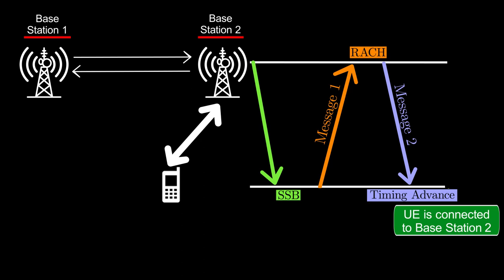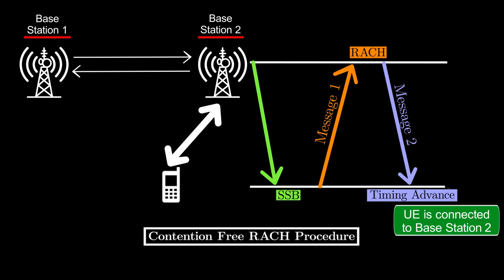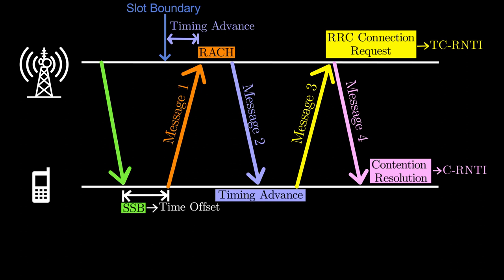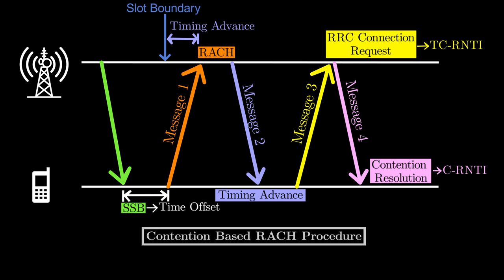This method of fast connection establishment is called contention-free RACH procedure. Note that the contention-free RACH procedure has only two messages, compared to the four messages involved in the previously explained contention-based RACH procedure.